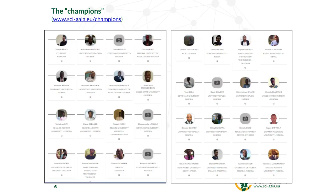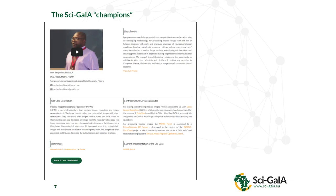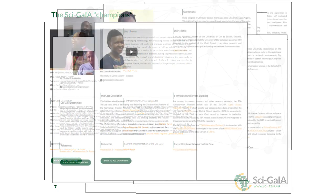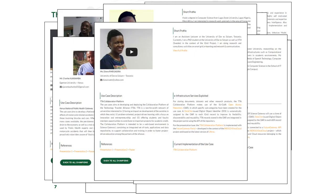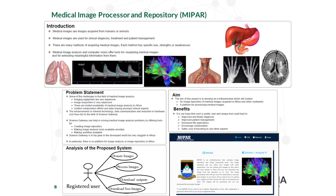If you go to the CyGaia website champions page, you can meet all 32 people. For any of them, you click the link underneath the picture and you can get the short profile, the CV, the description of the use case, what kind of eScience infrastructure services the use case is exploiting, and the references of the current implementation. You can meet the CyGaia champions and get information on who they are and the applications they are working on.